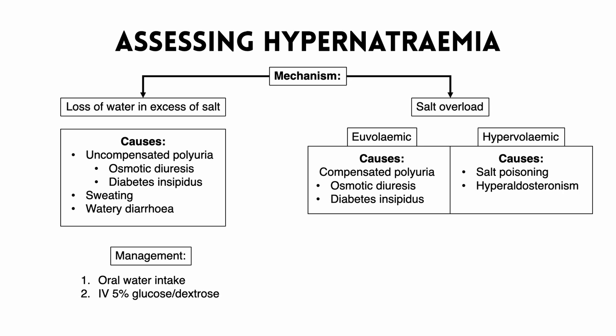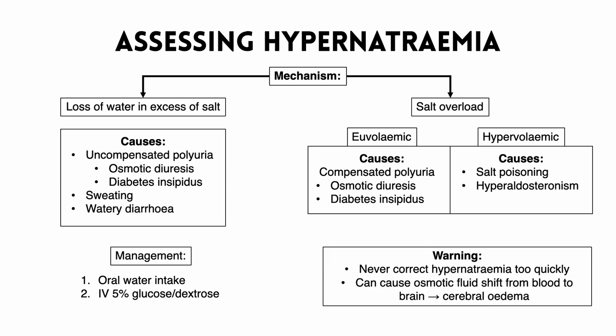In this case, we want to provide fluid which is isotonic — that is, it's not going to cause massive shifts in fluid across the body compartments — while not providing more sodium into the blood. And the way that we do that is by providing glucose or dextrose fluid. Again, another word of warning: similarly to hyponatremia, we never want to correct hypernatremia too quickly for a similar reason. If there's a sudden drop in blood sodium level such that the blood becomes much more dilute, then that fluid can shift into the brain rather than from the brain, like we saw in hyponatremia. So we can get a big fluid shift into the brain via osmosis and cause cerebral edema, which can be very dangerous.